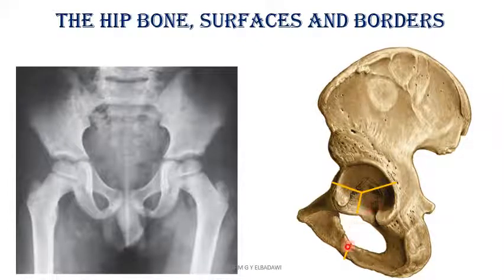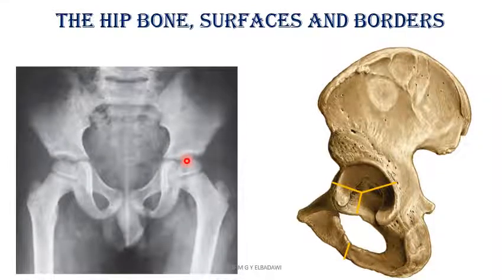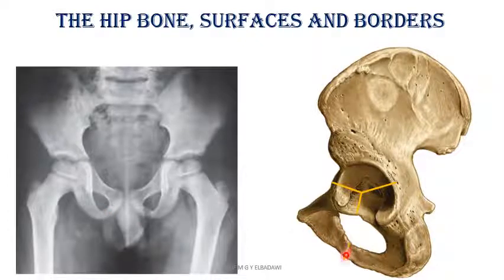They meet also at the side of the pubic arch between the ischial ramus and the inferior pubic ramus. The line of fusion at the acetabulum — the meeting point — will unite at the age of 14 to 16: 14 in females mainly and 16 in the male. The side of the pubic arch will unite at around seven years of age.